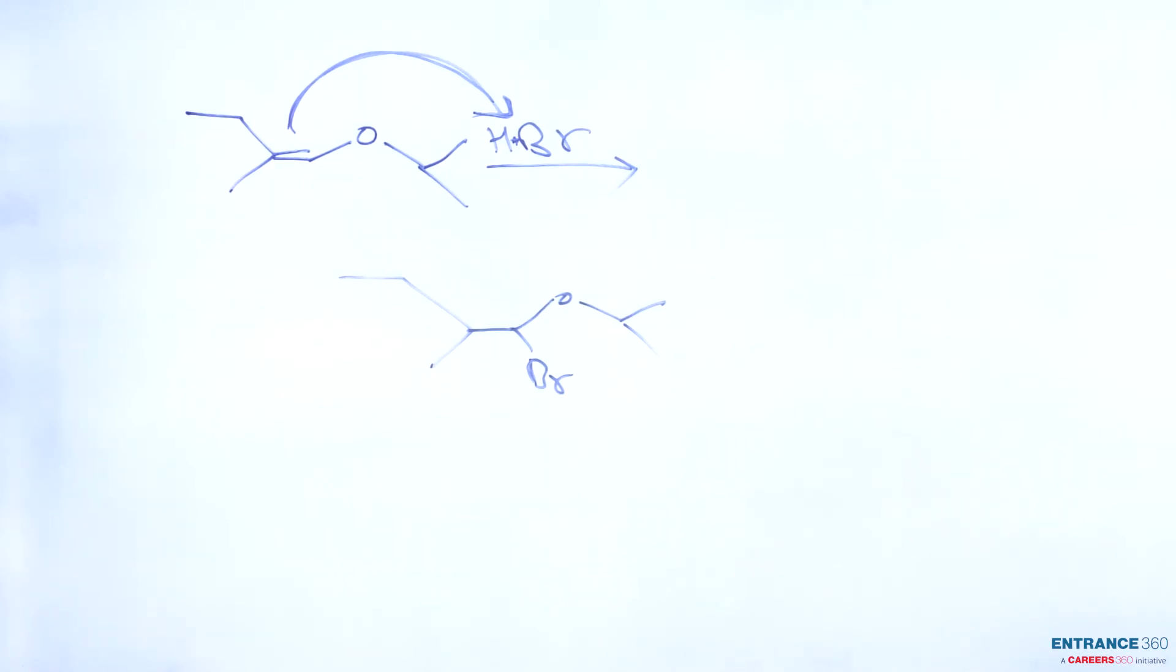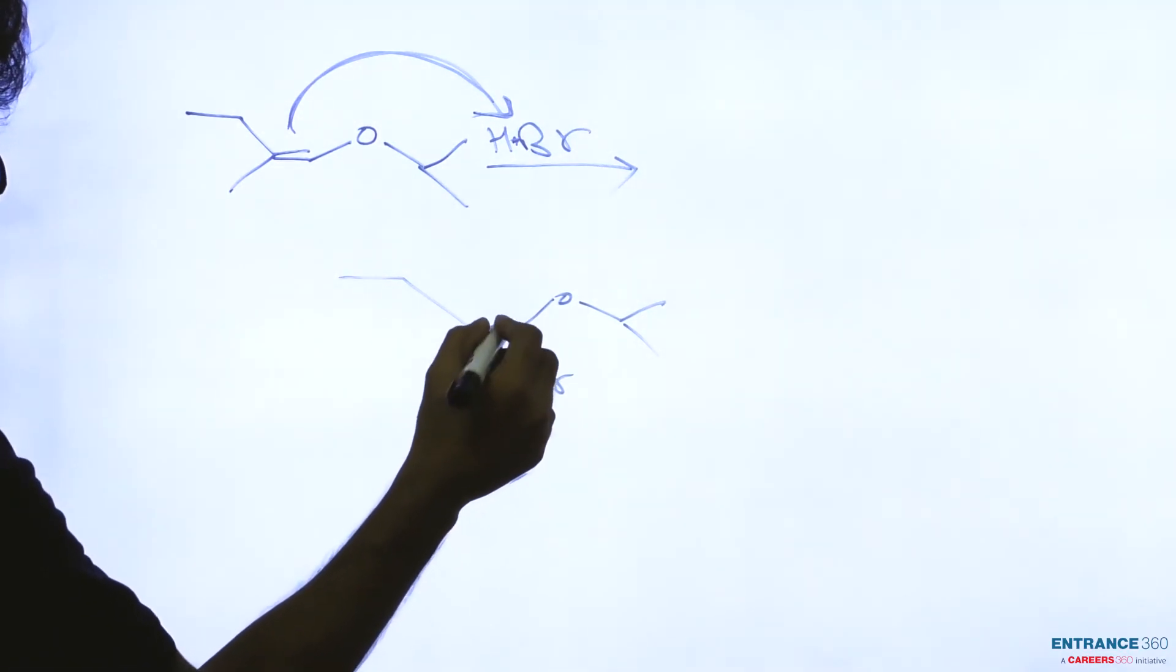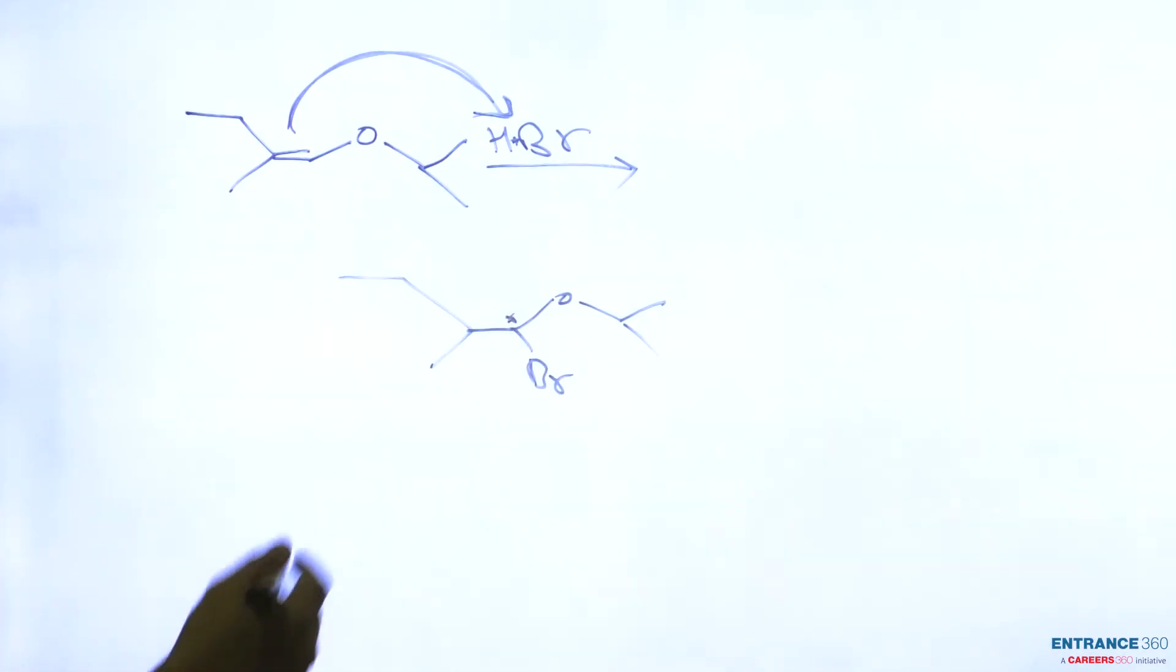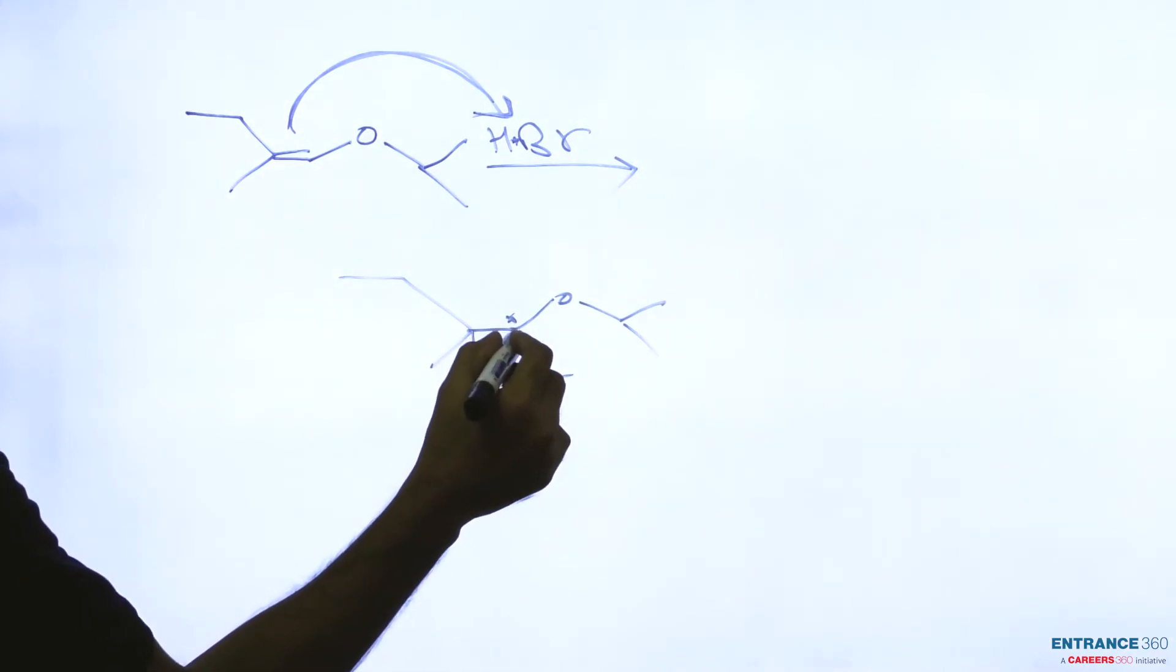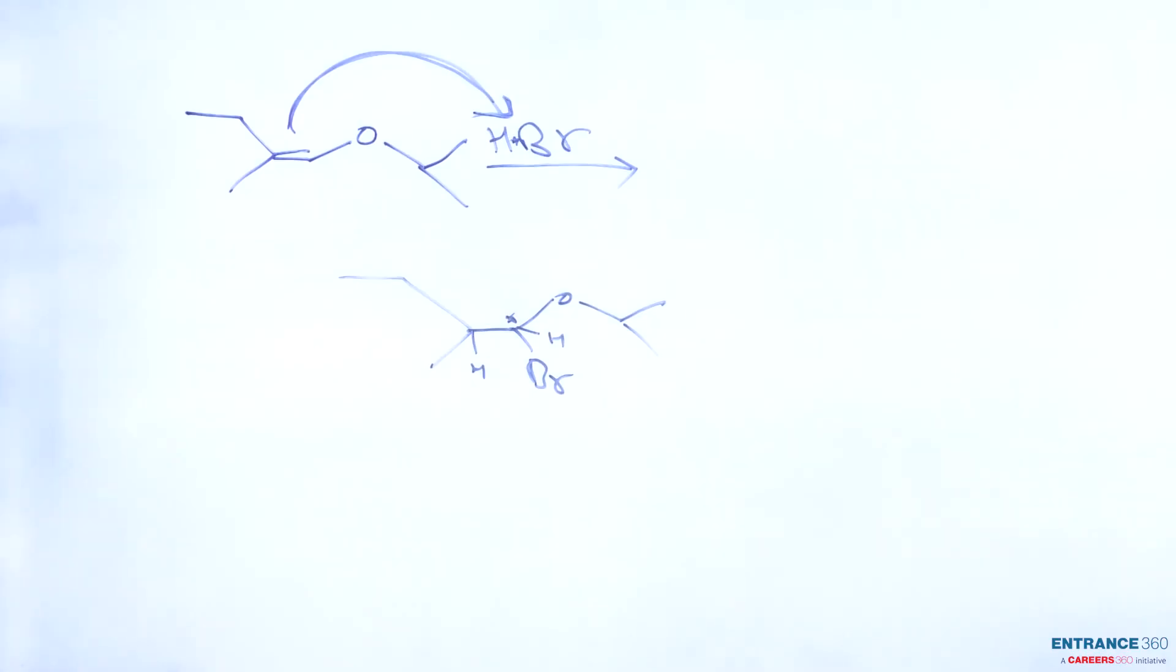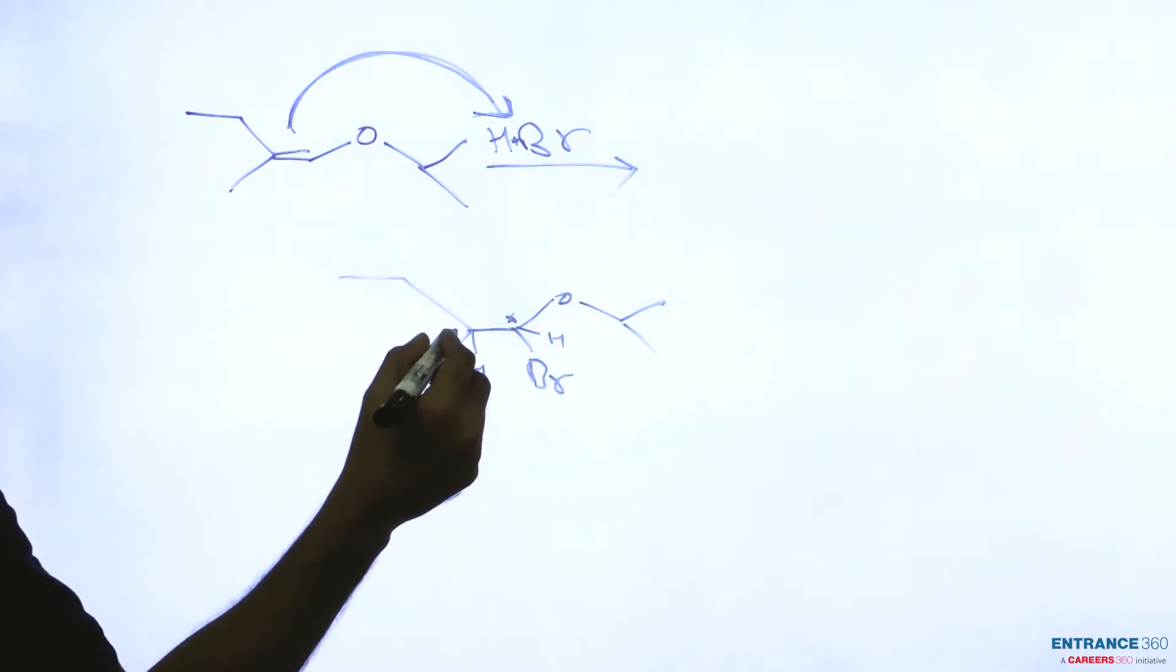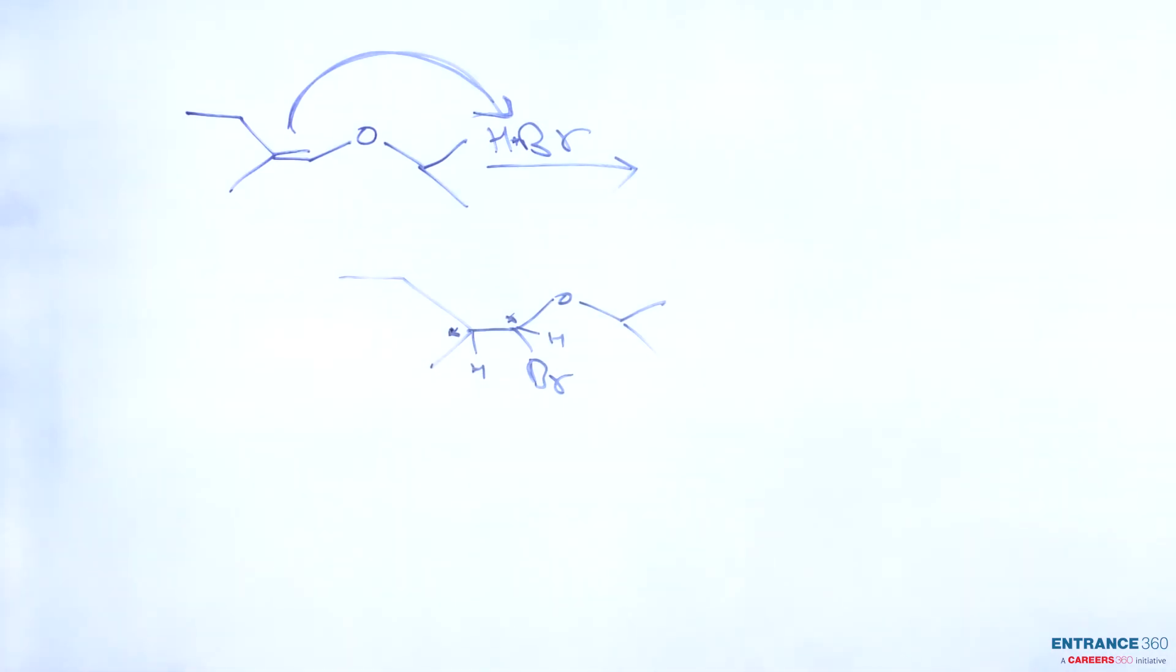This is a chiral center. H is here, and there is another H, so this is also an optically active or chiral center. So there are two chiral centers.